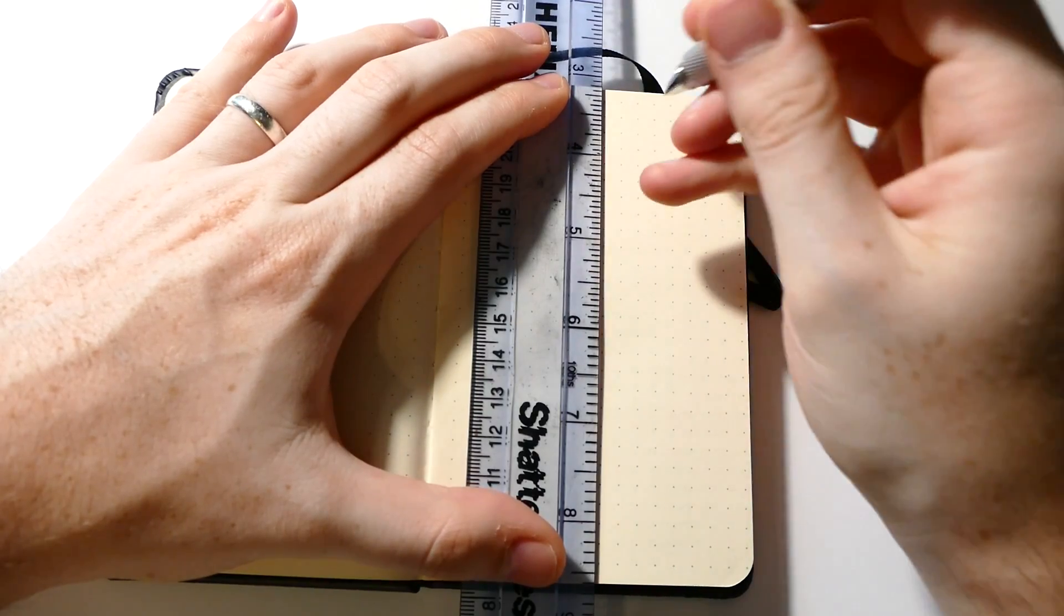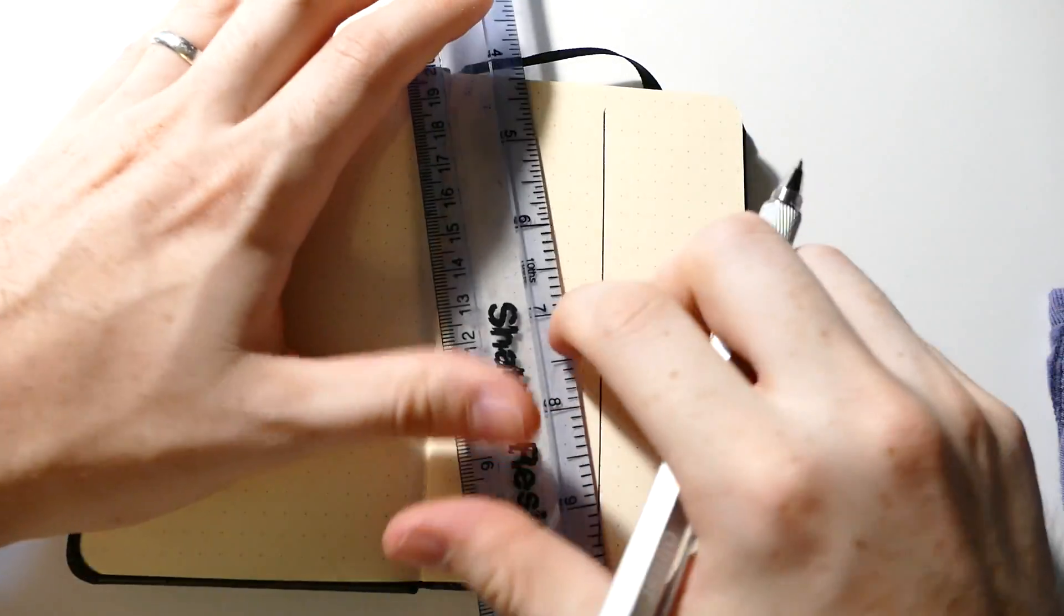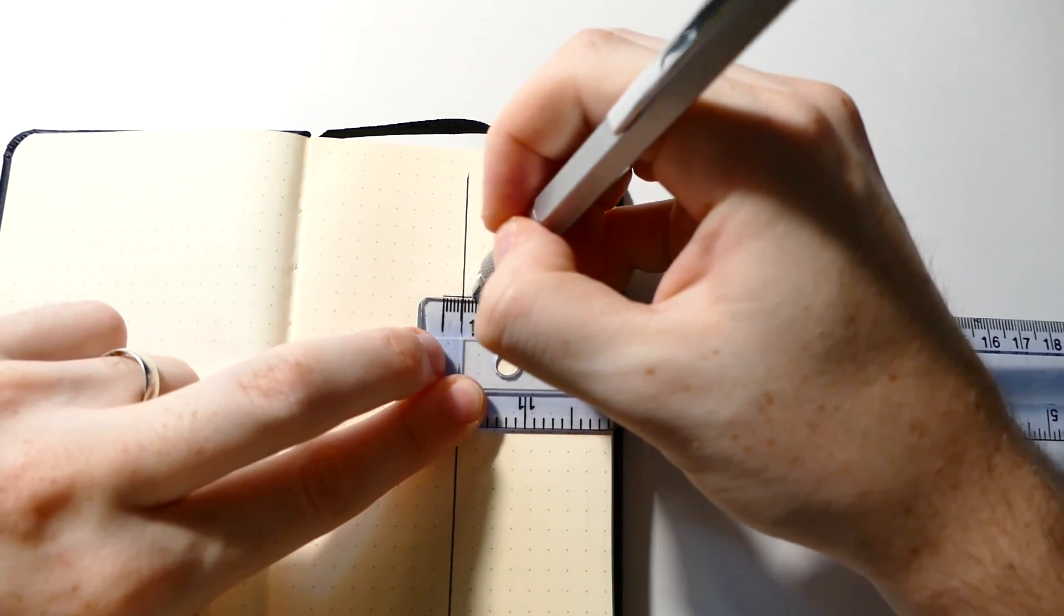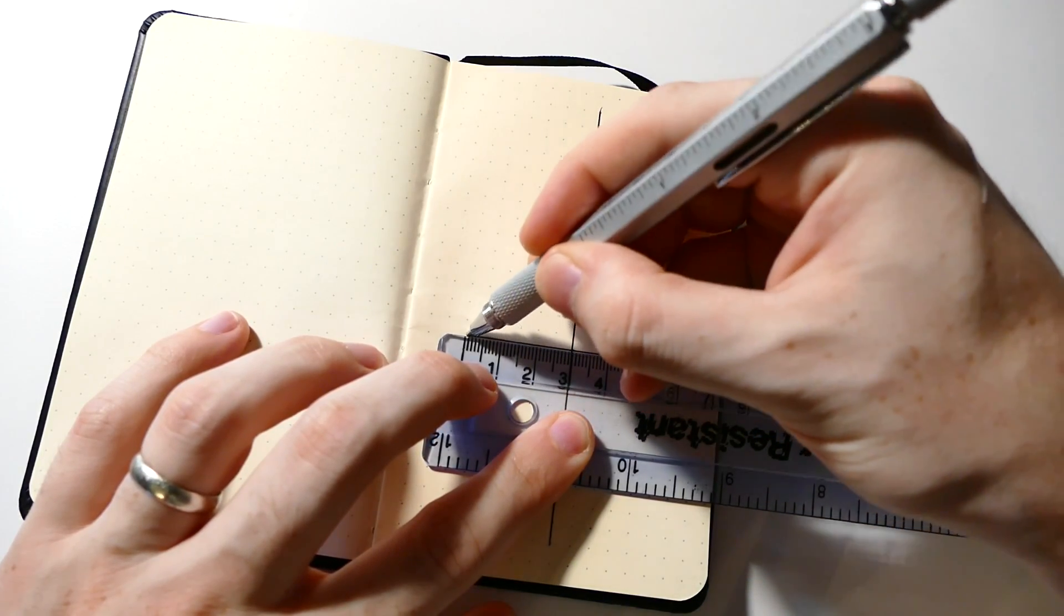Very simple. First thing we're going to do is start drawing our trapezoid. The top of the trapezoid, the smaller end, is going to be one centimeter. Then you're going to go down 3.5 centimeters for its height and it'll have a six centimeter base.